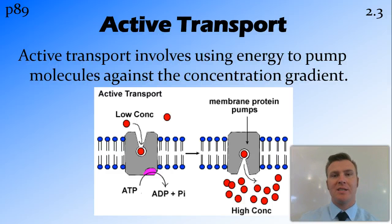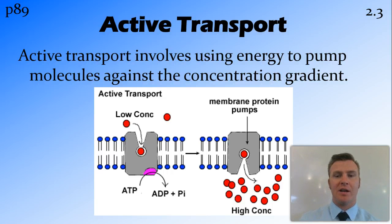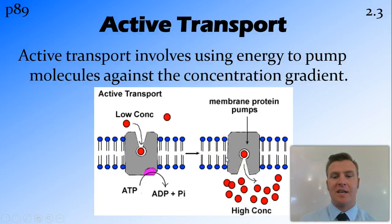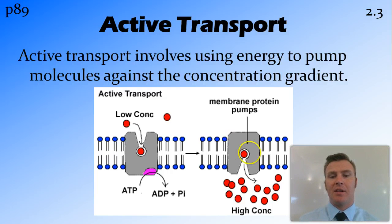The other type of transport is active transport, and it requires energy in the form of ATP to pump molecules across the membrane. This is usually against the concentration gradient. For example, if you've got a low concentration on one side and a high concentration on the other, but you still want to pump molecules from the low to the high, you need a pump that uses energy because it's going against the concentration gradient. If the gate just opened due to the concentration gradient, we'd get the molecules going in the opposite direction, from high to low.